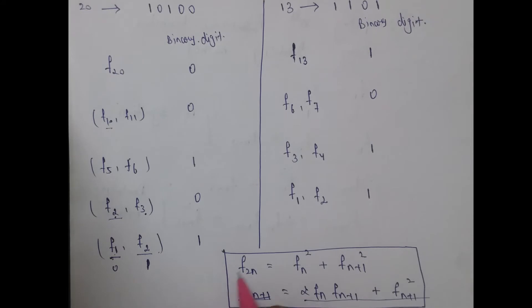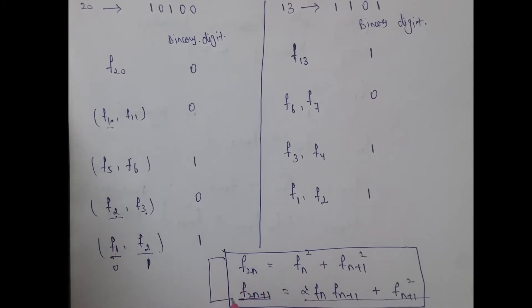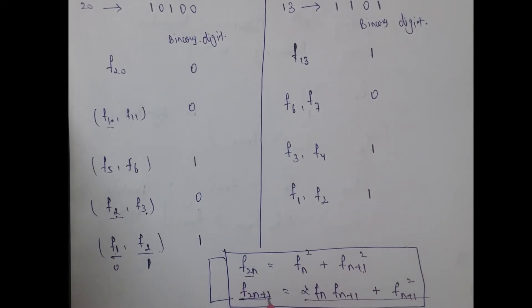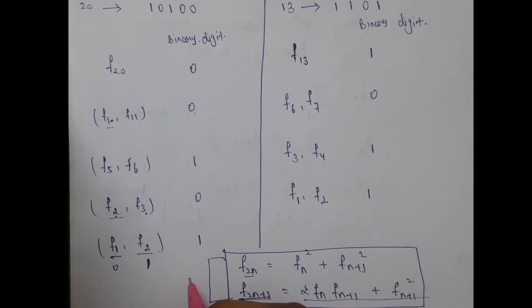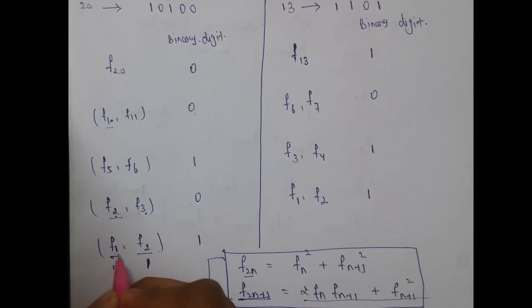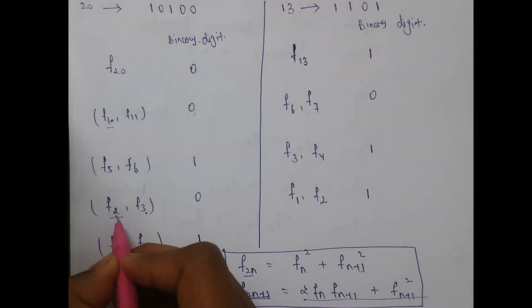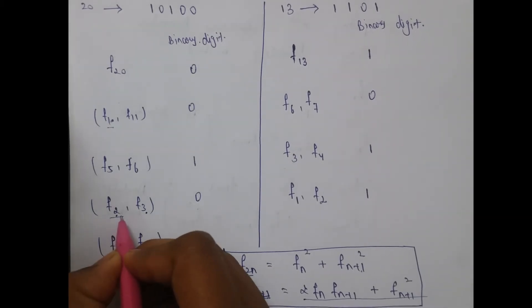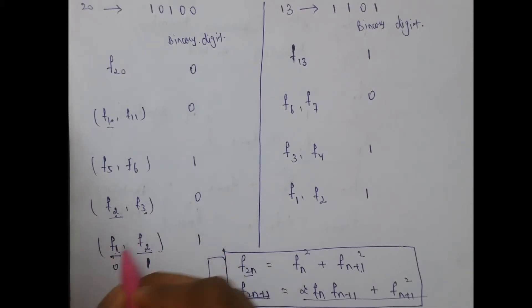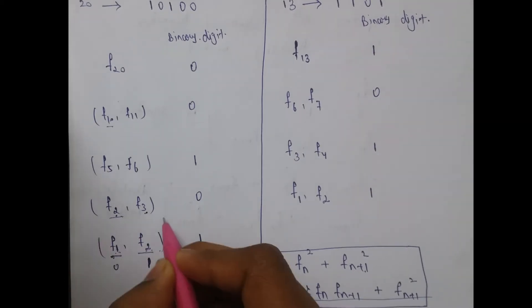We also know from this formula that given f(n) and f(n+1) we can only calculate f(2n) and f(2n+1). So let's apply this to our problem. Now we have f(1) and f(2), so we can calculate f(2n) which is f(2) and f(2n+1) which is f(3). So we can directly calculate this part by the doubling method.